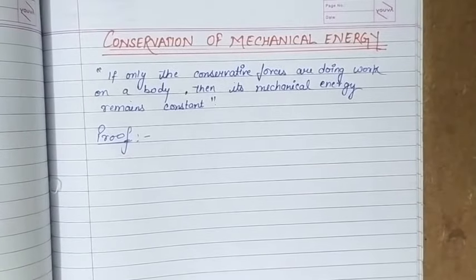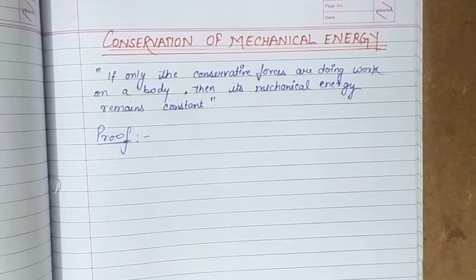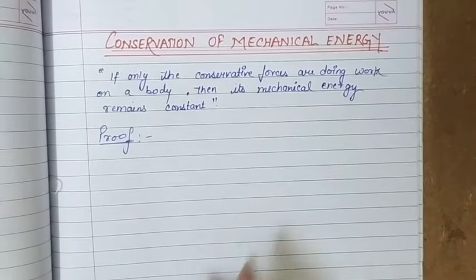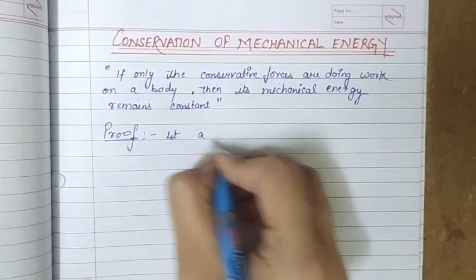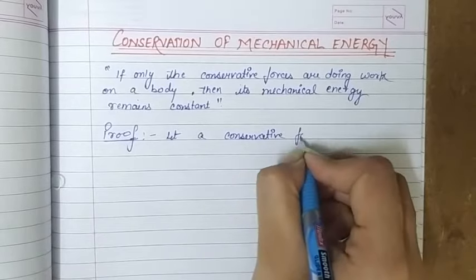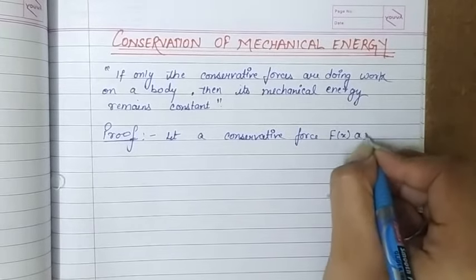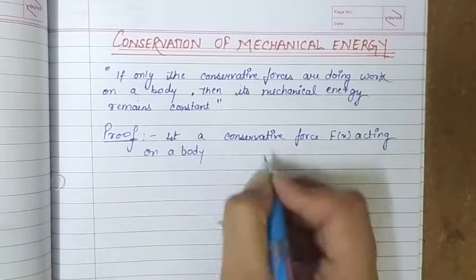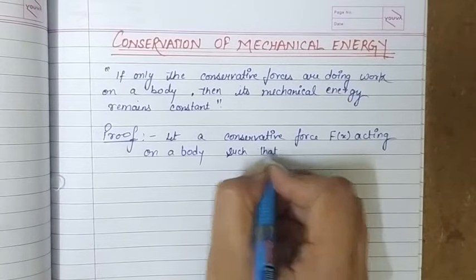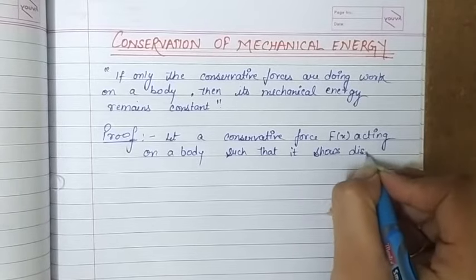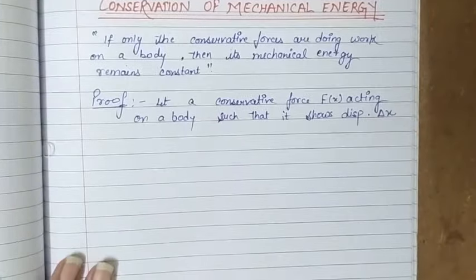For proving this, we are considering that there is a body which is undergoing a displacement delta x under the action of a conservative force. So we are assuming that a conservative force Fx is acting on a body such that it shows displacement delta x.